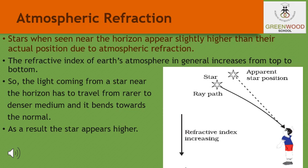Do you know that stars, when seen near the horizon, appear slightly higher than their actual position? This is because of atmospheric refraction. Since the atmosphere bends the starlight towards the normal, the apparent position of the star is slightly different from its actual position. The star appears slightly higher than its actual position when viewed near the horizon, as you can see in the figure.